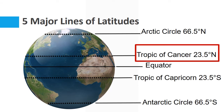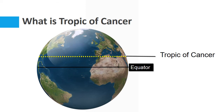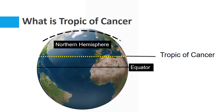But in this video, I am going to tell you about what is the Tropic of Cancer. Now focus on this image. This is the common image of our earth. This line is the longest latitude of earth, which is called the equator. And this line is called the Tropic of Cancer. It is in the Northern Hemisphere, located at 23.5 degrees latitude from the equator.